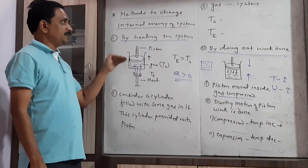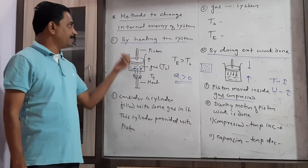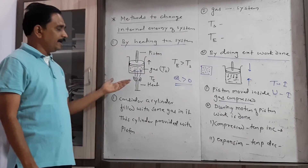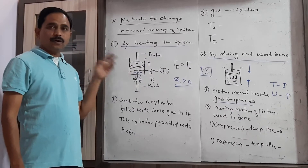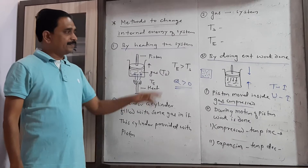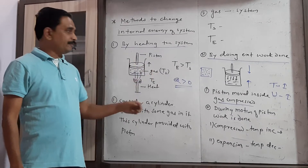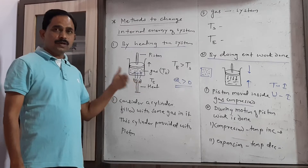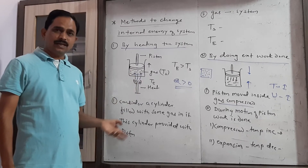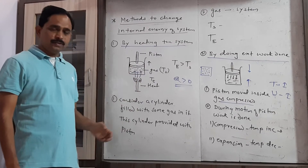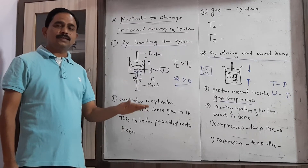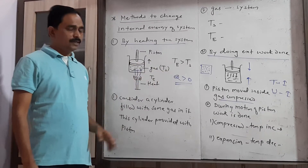These are the two methods to change the internal energy of the system. By heating the system: if we supply heat, the temperature goes on increasing, then internal energy increases; if temperature decreases, then internal energy decreases. By doing external work through compression or expansion, internal energy changes accordingly.